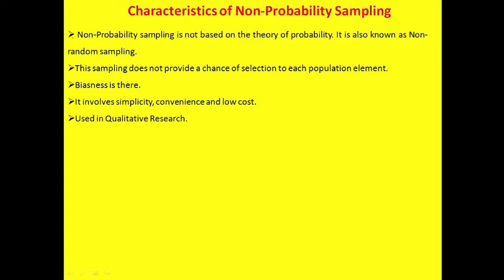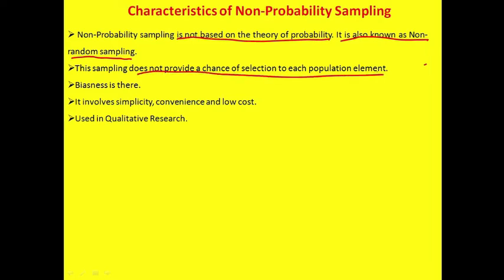Characteristics of non-probability sampling. Non-probability sampling is not based on the theory of probability. It does not provide an equal chance of selection to each population element. The researcher's or expert's judgment introduces biasness, which is why bias is present in this method.